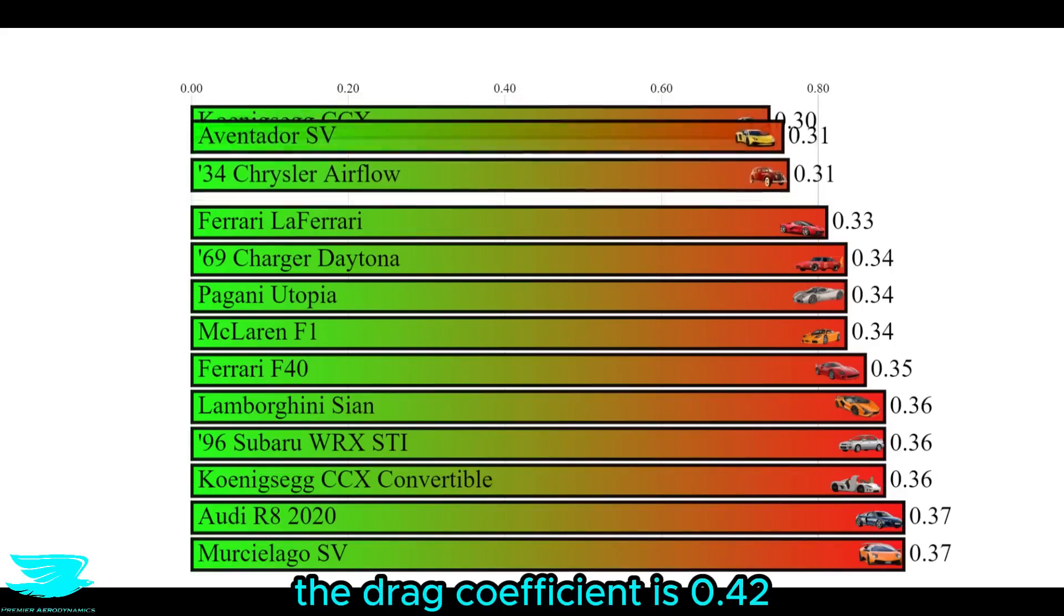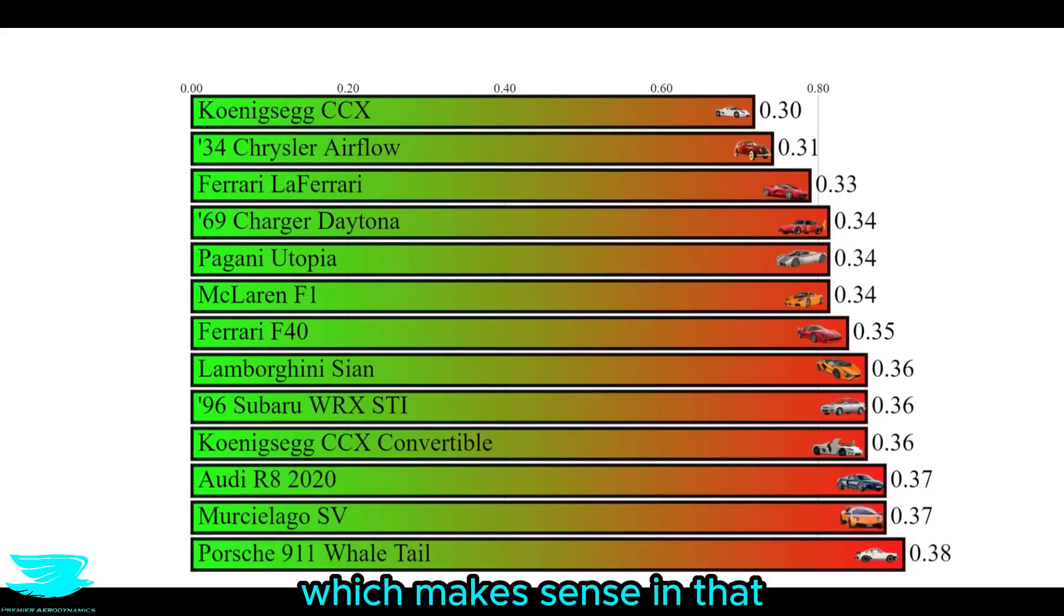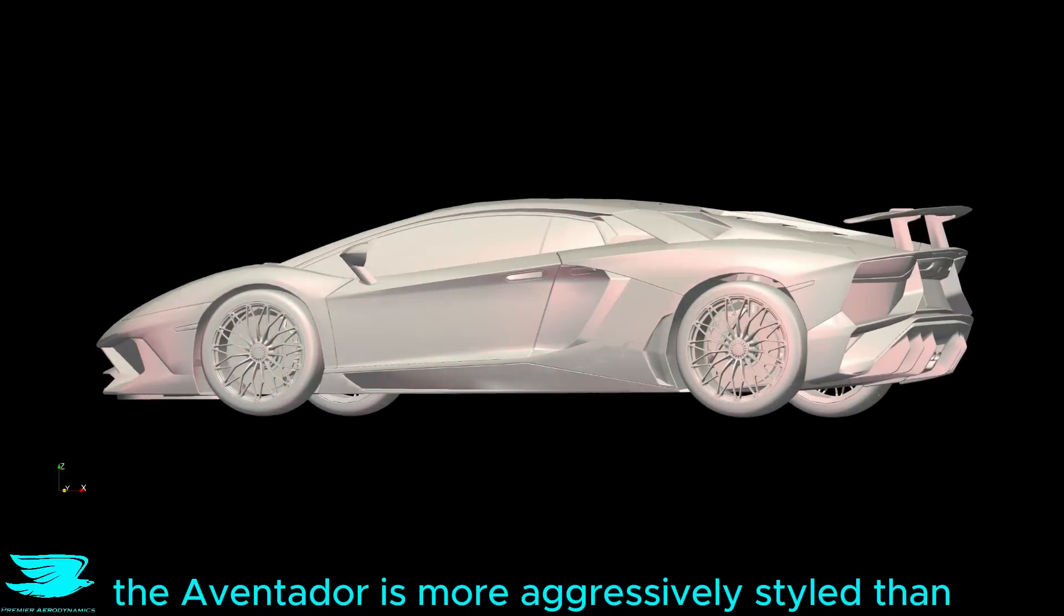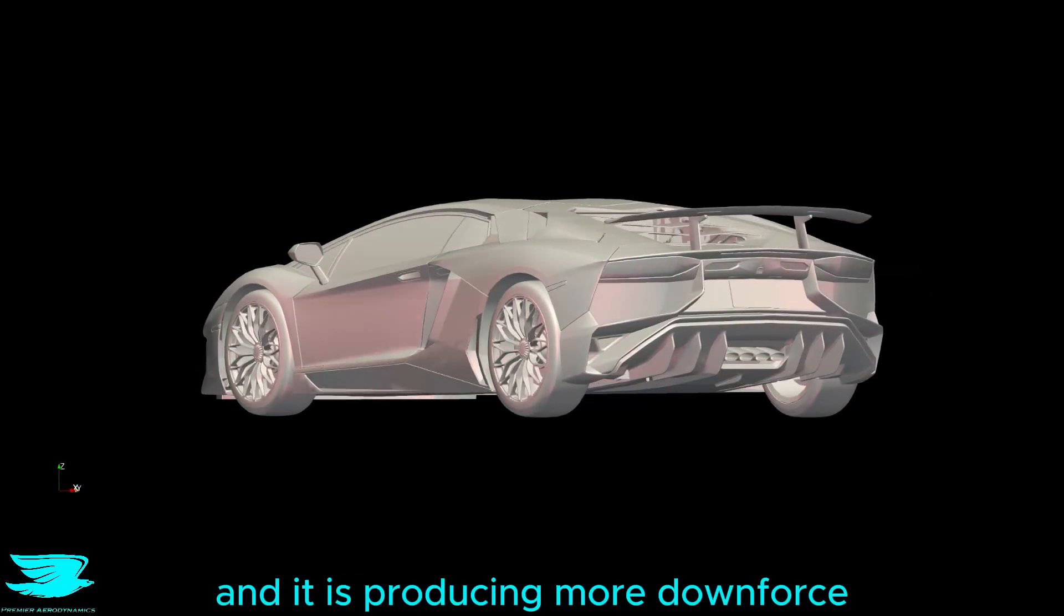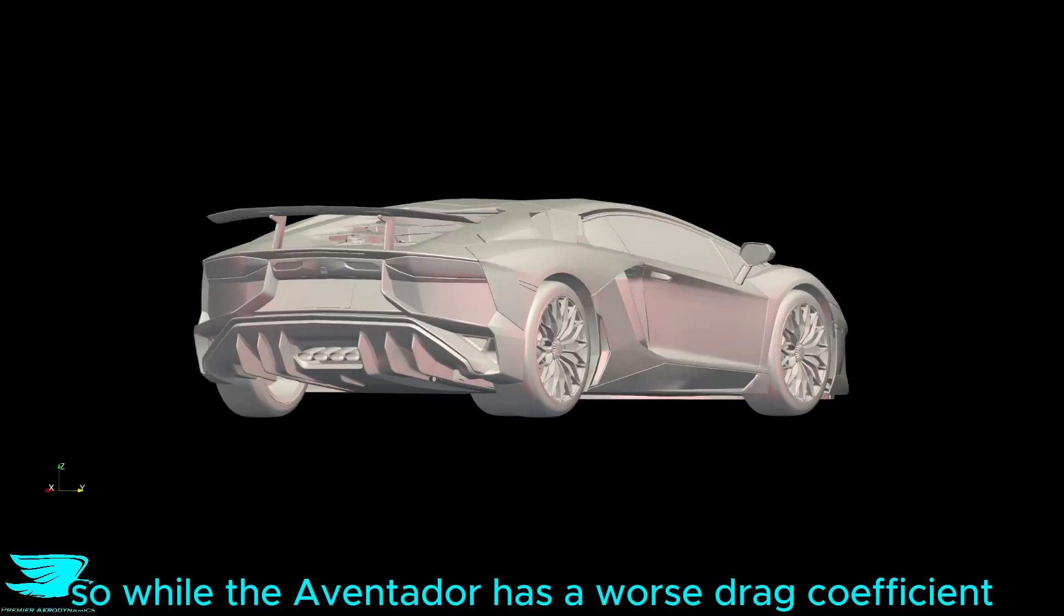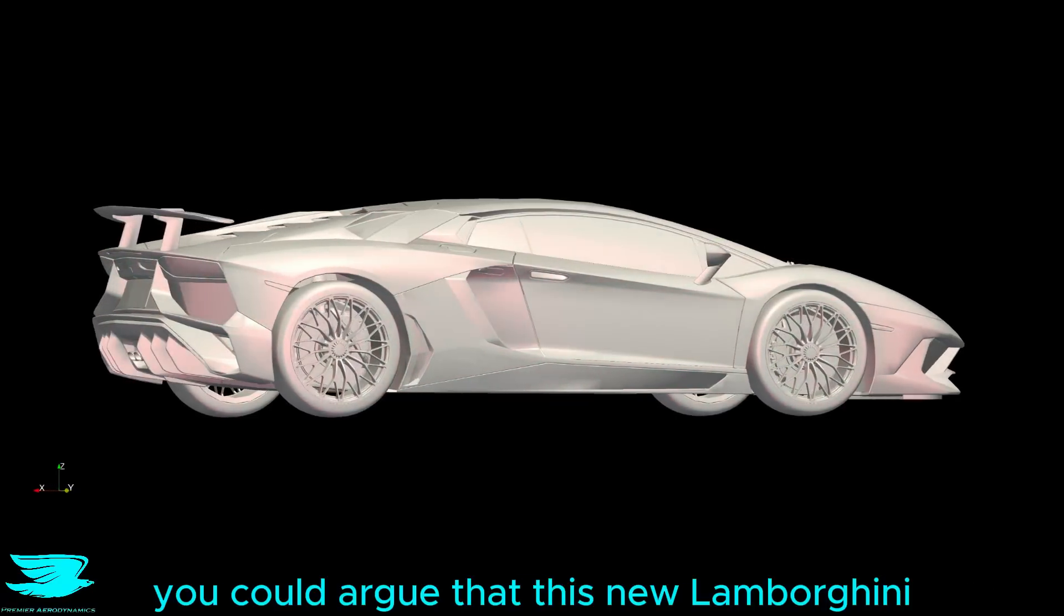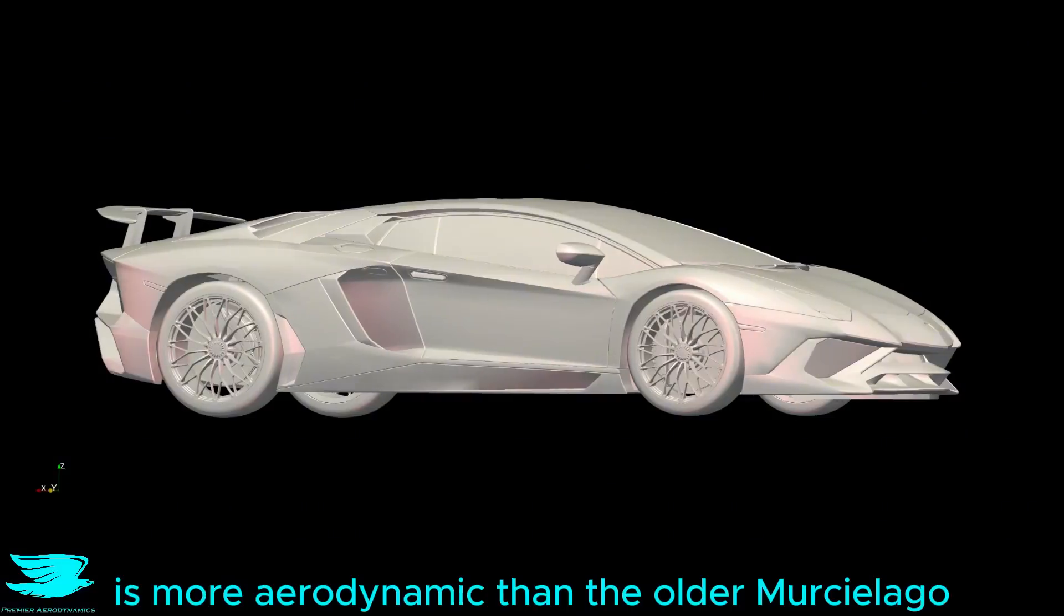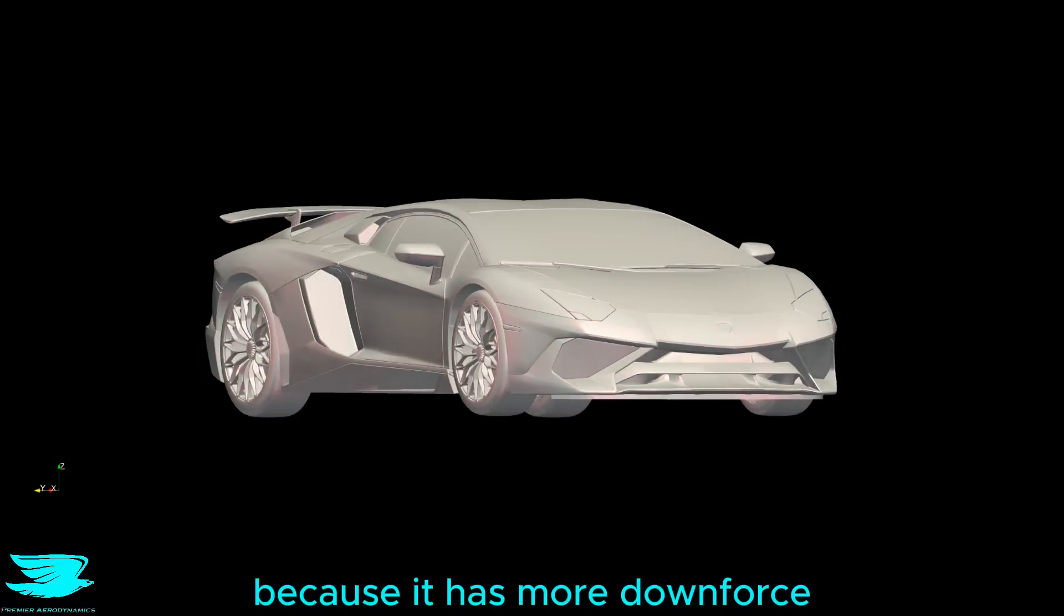The drag coefficient is 0.42, which makes sense in that the Aventador is more aggressively styled than the Murciélago, and it is producing more downforce. So while the Aventador has a worse drag coefficient, you could argue that this new Lamborghini is more aerodynamic than the older Murciélago because it has more downforce.